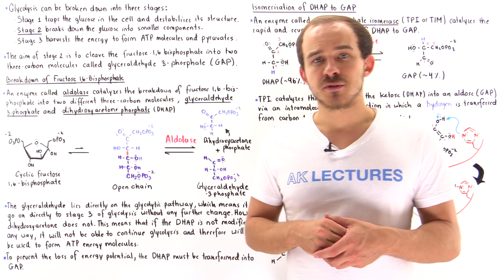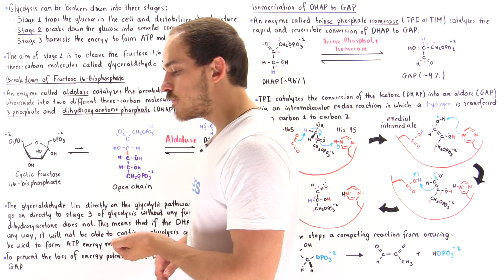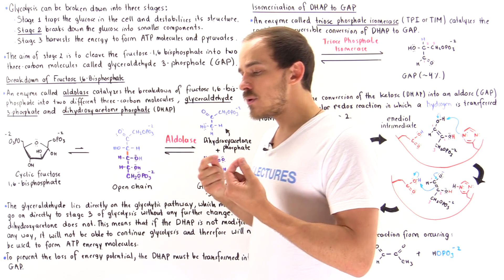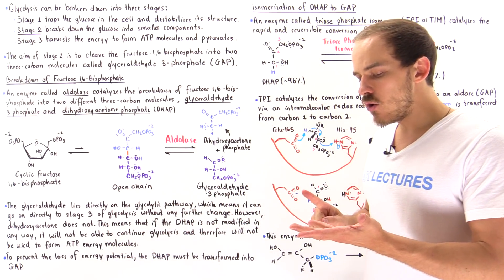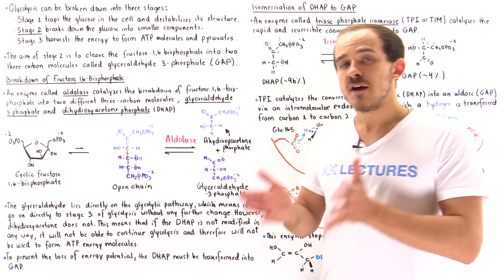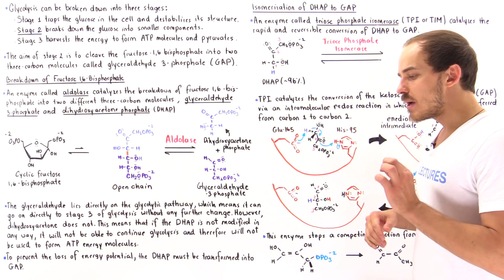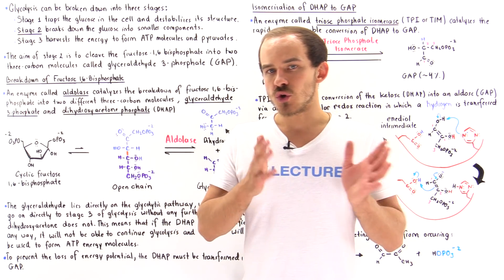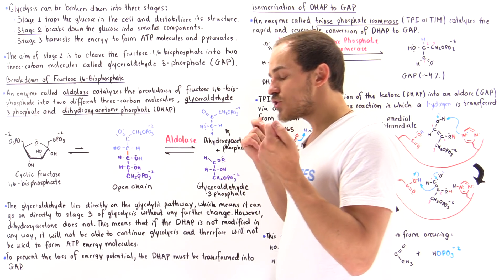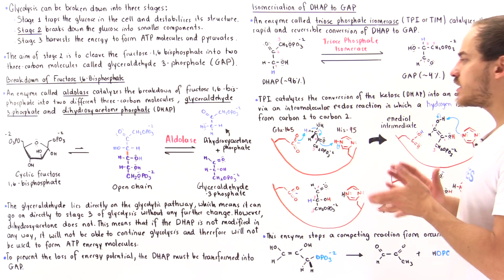Glycolysis consists of three different stages and previously we focused on stage one. In stage one, that glucose molecule is initially transformed into glucose 6-phosphate, which traps the glucose in the cell and begins to destabilize it, making it more reactive. The second step transforms the glucose isomer into the fructose isomer, forming fructose 6-phosphate. The final step in stage one takes that fructose 6-phosphate and transforms it into fructose 1,6-bisphosphate, which is reactive enough to move on to stage two — the focus of this lecture.